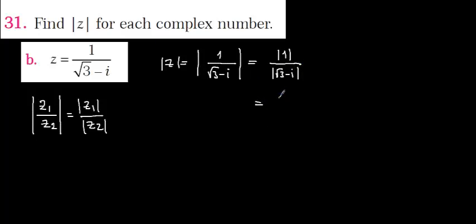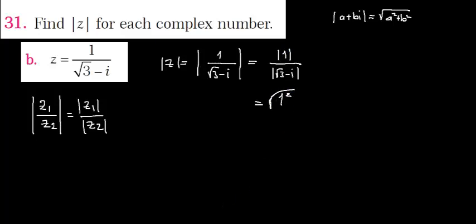The modulus of 1 is going to be 1. If you remember, the modulus of (a + bi) equals the square root of a squared plus b squared. Here we don't have an imaginary part, only the real part, so it's going to be the square root of 1 squared, which equals 1.